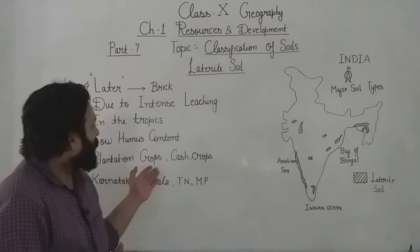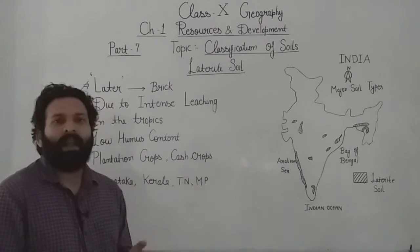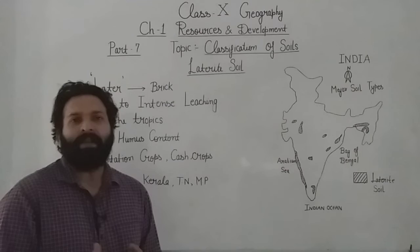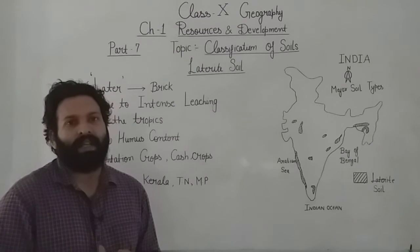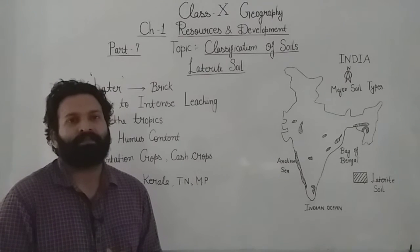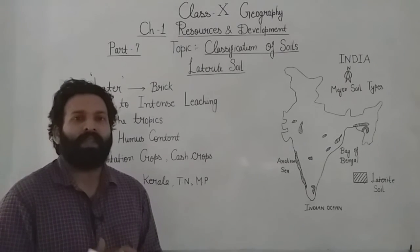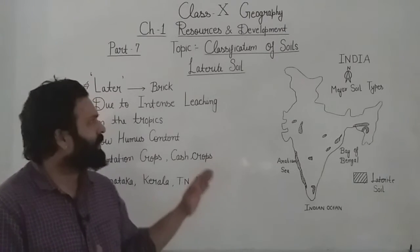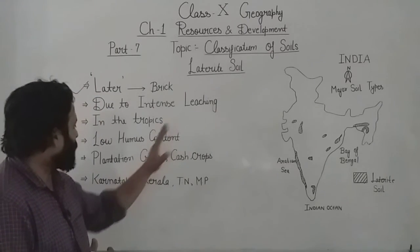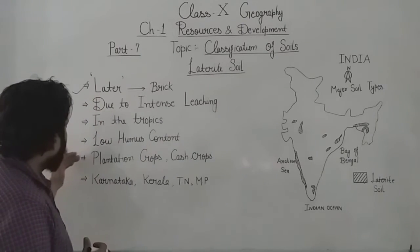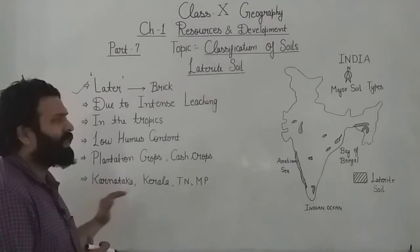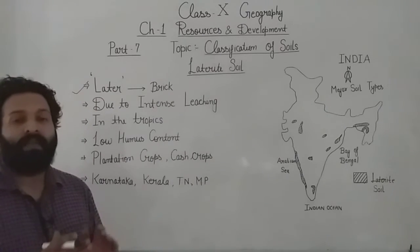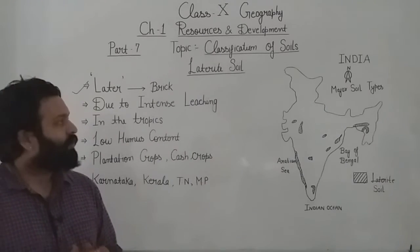Examples of cash crops and plantation crops grown on this soil include tea, coffee, and cashewnuts. These are some of the crops which are grown on laterite soil.